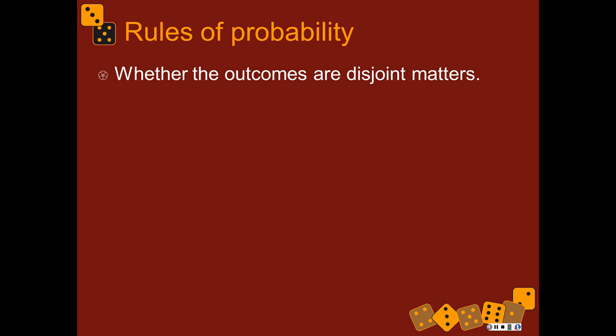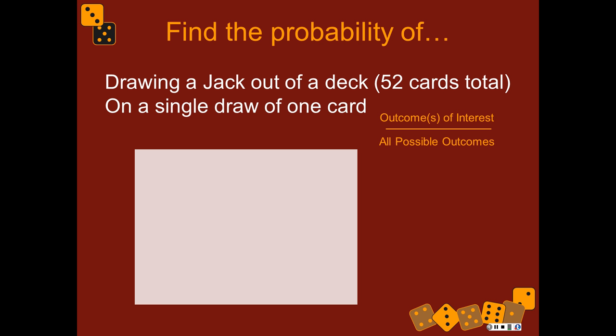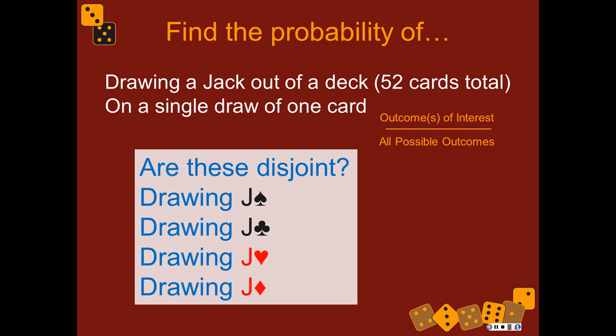So let's talk about the rules of probability. Let's say you want to know the probability of drawing a jack out of a deck of 52 cards on a single draw of one card. The number of ways that can happen is four — there are four jacks. So are these disjoint? Is drawing one jack a disjoint event from drawing the other jacks? The question is: if you draw a jack of hearts or a jack of spades, can you draw both at the same time? I think I've ruled that out by saying on a single draw of one card. So you can't have the jack of spades and the jack of hearts at the same time — these are disjoint.